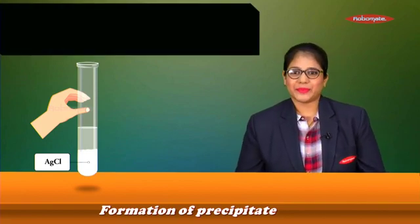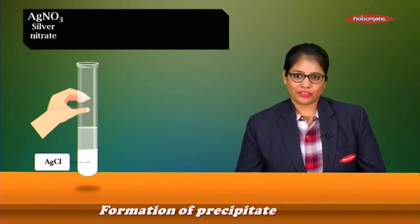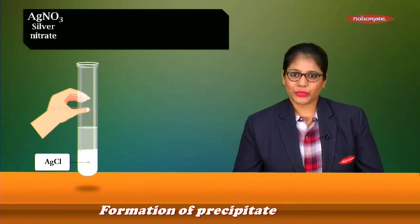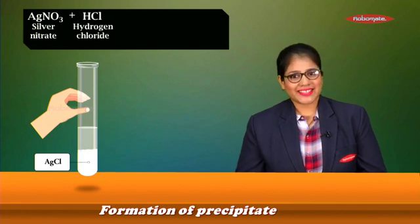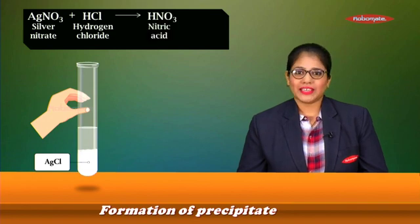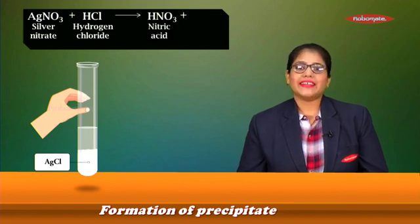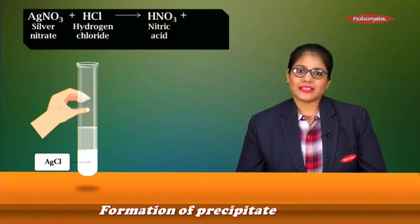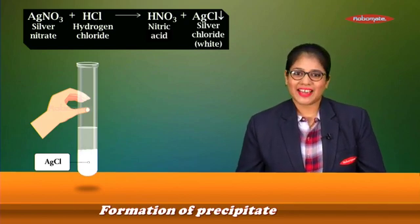The reaction taking place in this precipitation is: silver nitrate (AgNO₃) reacting with hydrochloric acid (HCl) to give nitric acid (HNO₃) and a precipitate of silver chloride (AgCl).